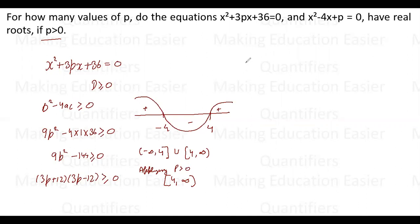Now let us solve it for the second equation. The second equation is x² - 4x + p = 0. So it is 16 - 4p is greater than equal to 0, therefore 4p is less than equal to 16, p is less than equal to 4.